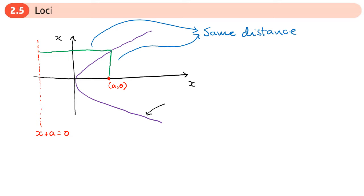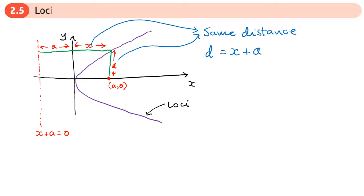If we call this distance d, that distance from the focus to the point is meant to equal the distance from the directrix. That distance is made up of the distance from the directrix to the y-axis, which is a, and from the y-axis to the parabola, which is x. So we can write d equals x plus a.